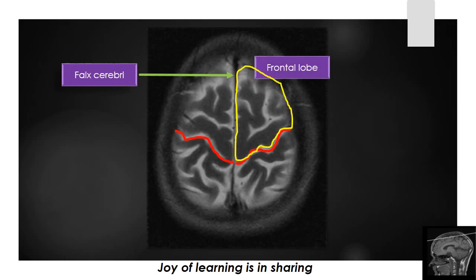The part of the cerebrum anterior to the central sulcus at this level is formed by the frontal lobe, and posterior to the central sulcus is formed by the parietal lobe.